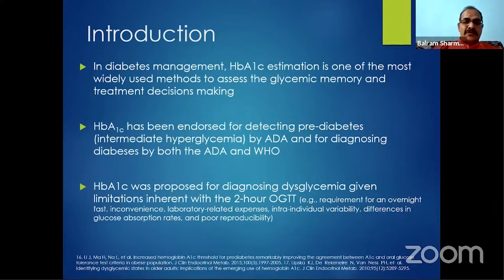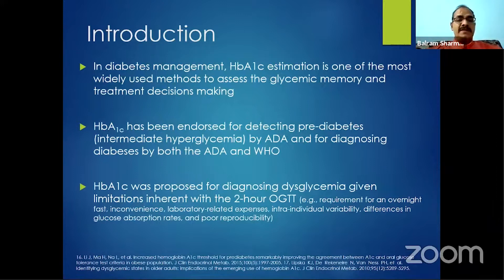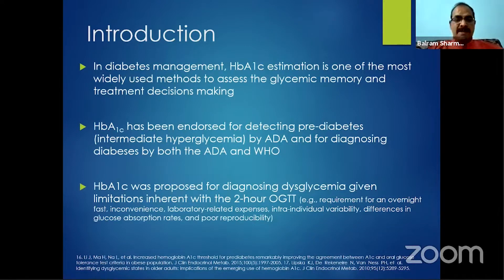HbA1C was proposed for diagnosing dysglycemia because of various problems with the OGTT previously used. Limitations with the two-hour OGTT include requirement of overnight fasting, inconveniences, higher expenses, inter-individual variations, differences in glucose absorption, and poor reproducibility. These factors helped HbA1C establish itself as a major diagnostic tool.